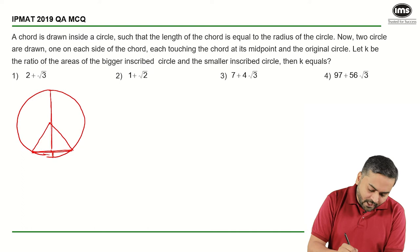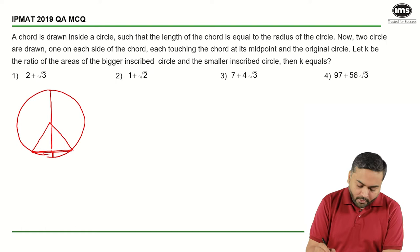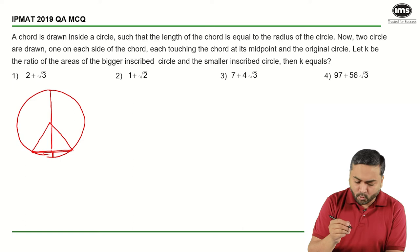Let K be the ratio of area of bigger inscribed circle and the smaller inscribed circle then K is equal to. So, basically I want to find out the ratio of area of bigger circle to that of the smaller circle. To calculate that I will need to find out what is the radius of a bigger circle and radius of the smaller circle.